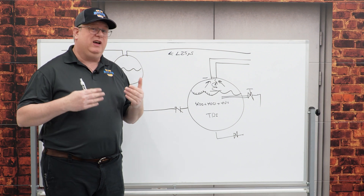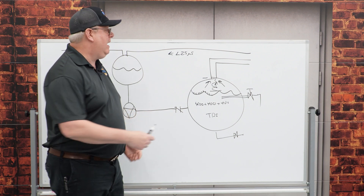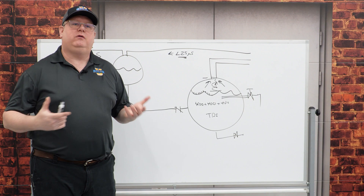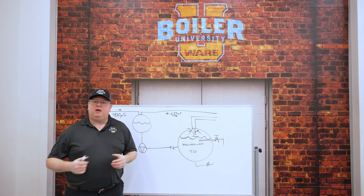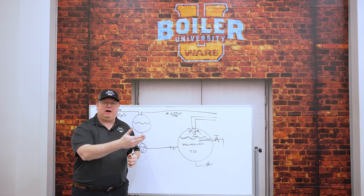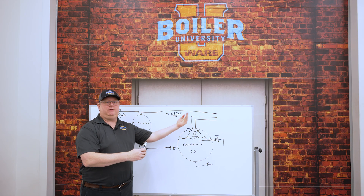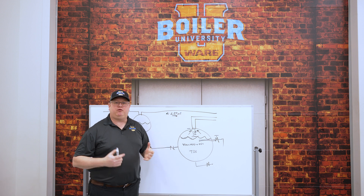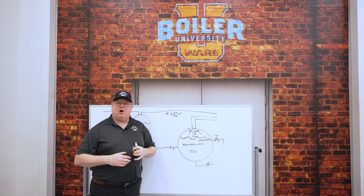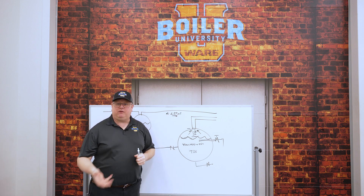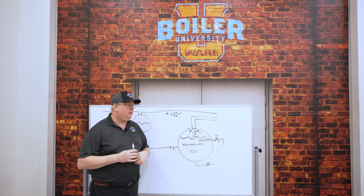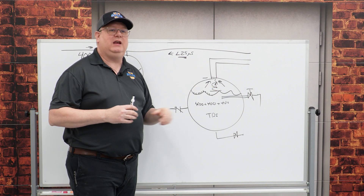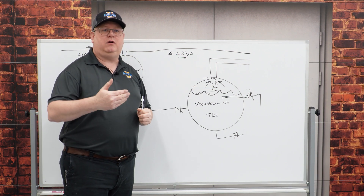A really easy way to test for that is to test the condensate return, because if we're carrying solids out, that's going to be coming back. Getting a sample from a drip leg or a condensate receiver out in the system — if we see that number spike, that's going to indicate that we have carryover.